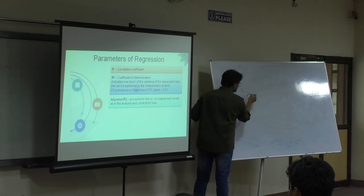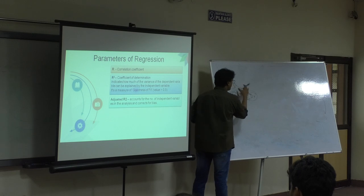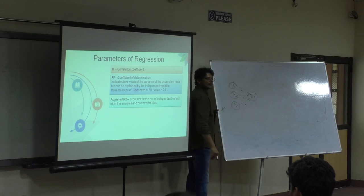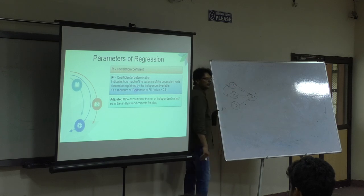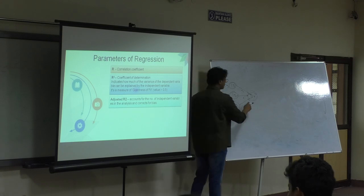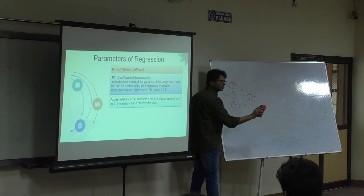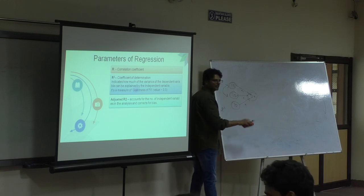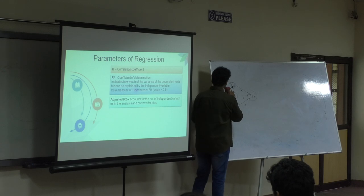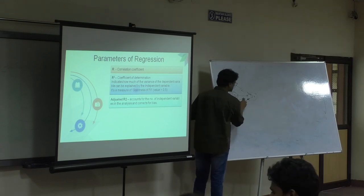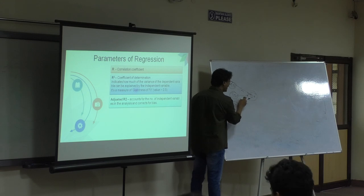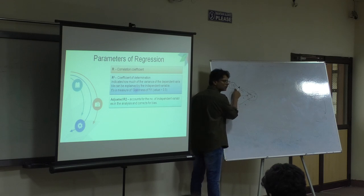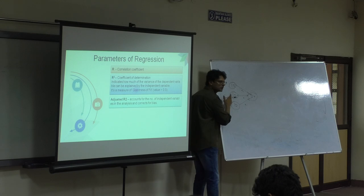But since there are three, I have to adjust my R-square. Because there might be some change in this which is affected also because of this, not entirely of this. I am saying the influence of this is this much x. But it could be that this x is bigger - 20% of this x is because of the interaction of this also. It could be. And that's why I am adjusting my R-square.